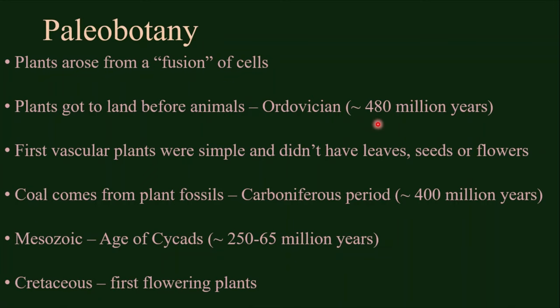The first vascular plants — that is, plants that have tissues for the transportation of substances — were very simple and didn't have roots, leaves, seeds, or flowers. Coal comes from fossils of plants that lived in the Carboniferous period, about 400 million years ago. In the Mesozoic Era, the Era of Dinosaurs, a group of plants called the Cycads was very abundant. That's why the Mesozoic Era is also known as the Age of Cycads. In the Cretaceous period of the Mesozoic Era, the first flowering plants appeared.